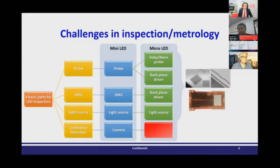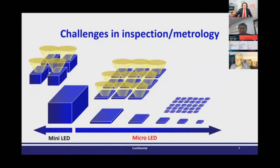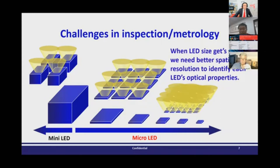There are many talented teams working on probe and electrical measurement, but what about the camera? In optics, every kind of size variation is all about resolution. When your micro LED gets smaller and smaller, you find that the light going to your detector will be mixed, so you cannot identify each LED's optical properties. We need better spatial resolution to do optical inspection — whether for 10 micrometer, 5 micrometer, or 1 micrometer micro LEDs, or future nano LEDs.